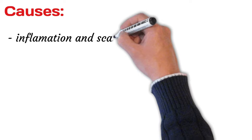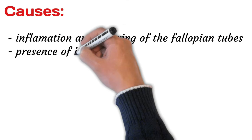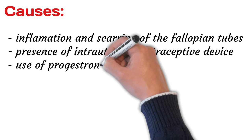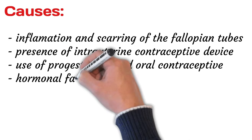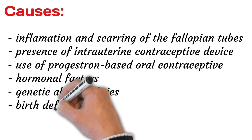The cause of an ectopic pregnancy isn't always clear. In some cases, the following conditions have been linked with ectopic pregnancy: inflammation and scarring of the fallopian tubes from a previous medical condition, infection, or surgery; presence of an intrauterine contraceptive device; use of progesterone-based oral contraceptives; hormonal factors; genetic abnormalities; and birth defects.